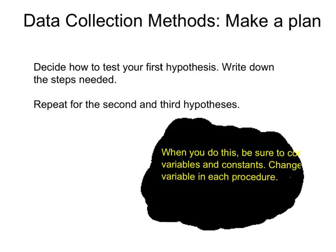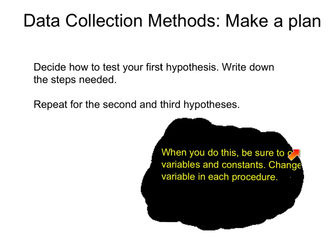What you have to do now is decide how to test your first hypothesis — the one about acidity — and write down the steps you have to carry out. Then do the same for surface area, and then do the same for temperature. Remember to change only one variable in each procedure.